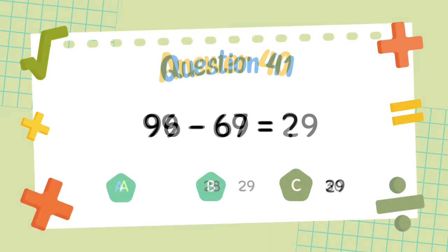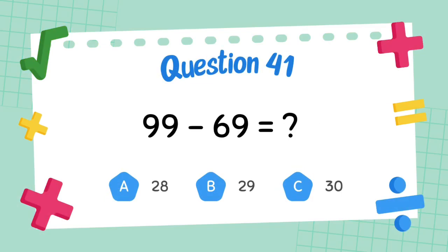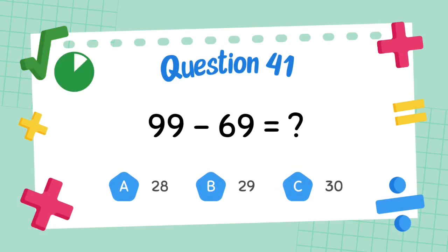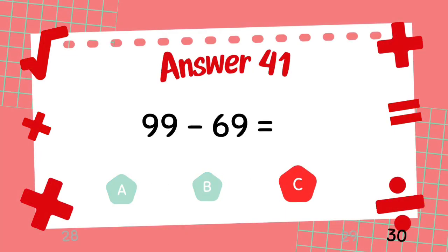What is 99 minus 69? The answer is 29. What is 99 minus 69? The answer is 30.